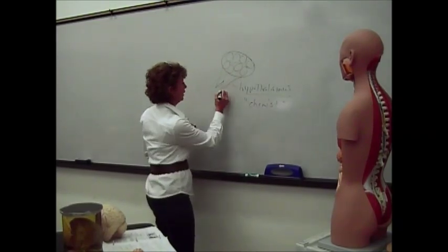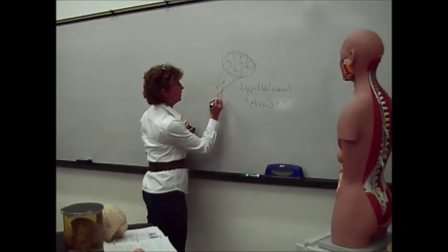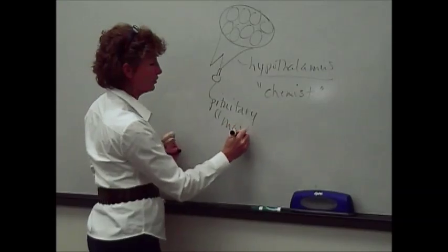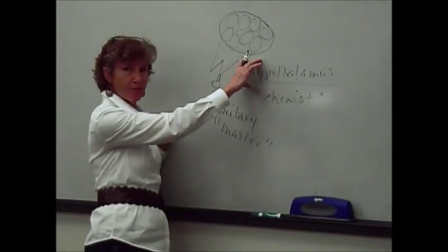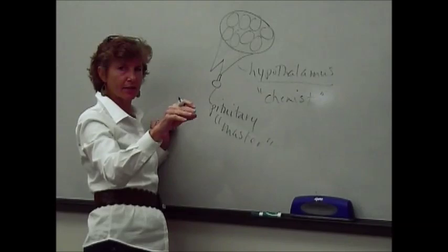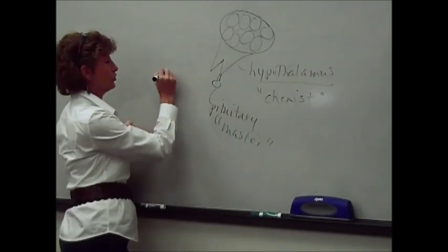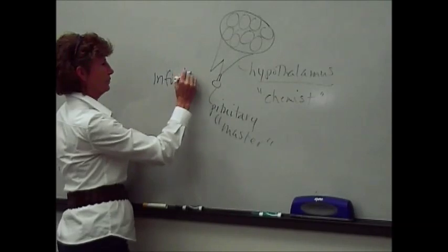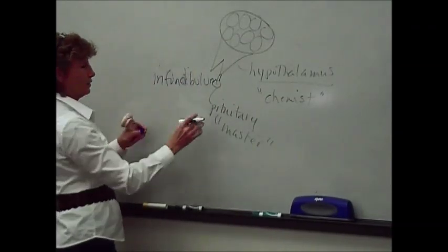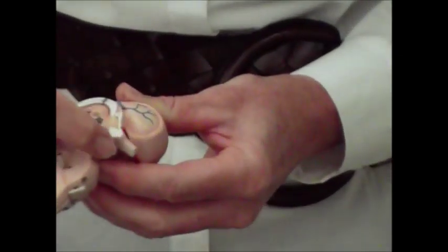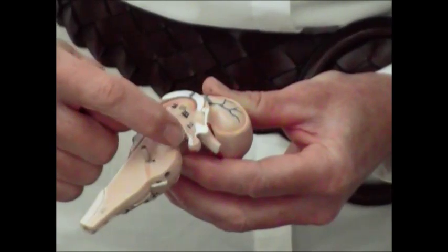Coming off of the hypothalamus, you have a little stalk with a pea-shaped organ on it. That's known as your pituitary gland. The pituitary gland is commonly called the master gland because it takes the information that the hypothalamus has found and tells your body what hormones to put out. It hangs off a little stalk known as the infundibulum. On the models, you can see the W of the hypothalamus and the P-shaped pituitary hanging off the infundibulum.